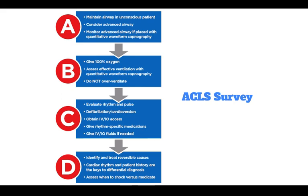Next is circulation. Evaluate rhythm and pulse, defibrillate or perform cardioversion if needed, obtain IV or IO access, give rhythm-specific medications, and give IV or IO fluids if needed. Then identify and treat reversible causes. Cardiac rhythm and patient history are the keys to differential diagnosis, and assess when to shock versus medicate.